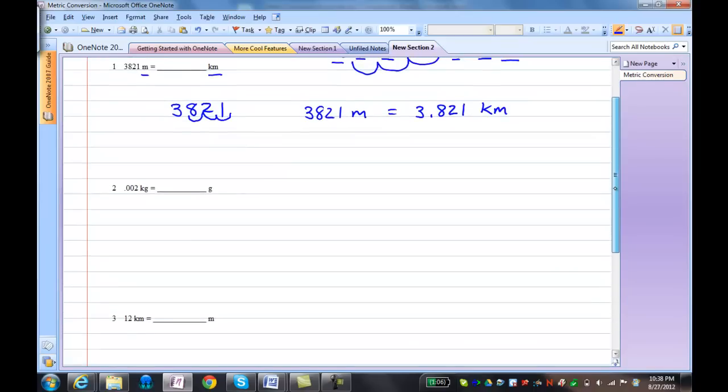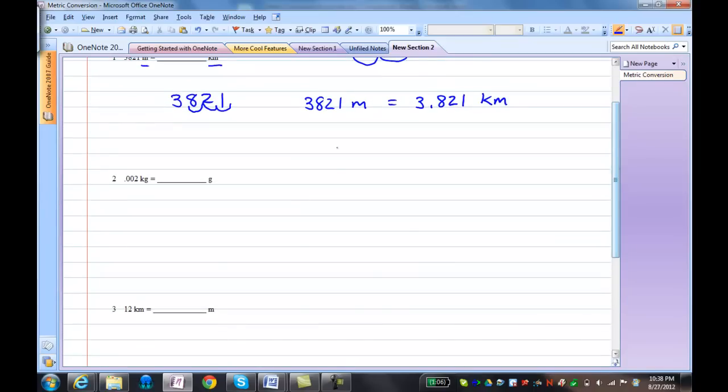Let's look at problem number two. Once again, King Henry died Monday drinking chocolate milk. In this case, we're going to substitute grams for our base unit. We won't be talking about meters. We'll be looking at grams.